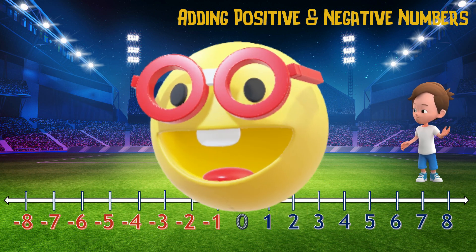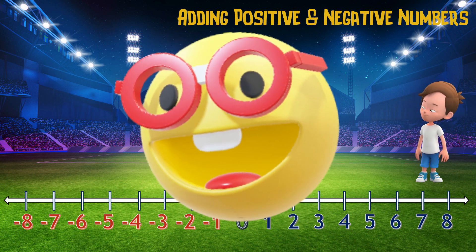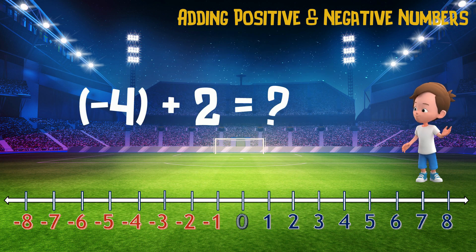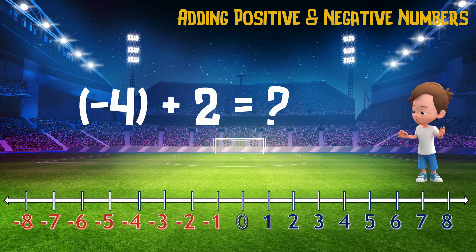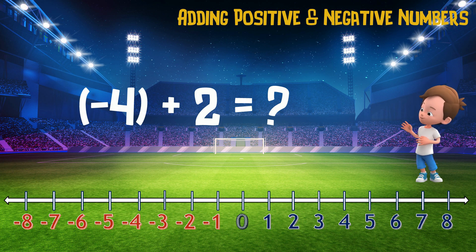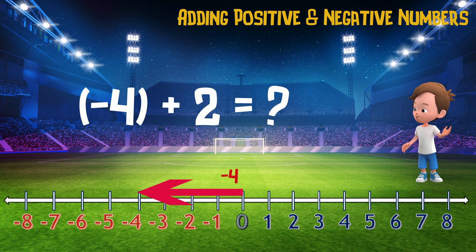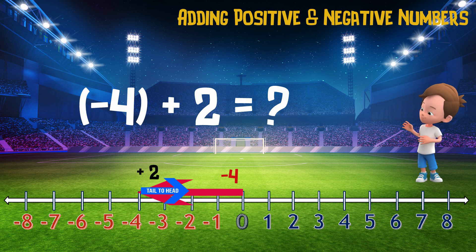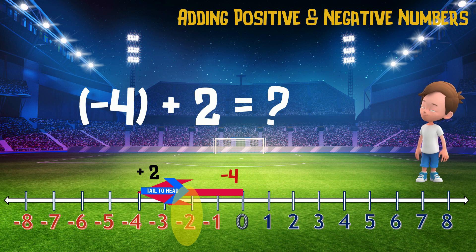Let's look at our second example: negative 4 plus positive 2. Let's show the answer using the number line. Placing the corresponding arrows on the number line, we have negative number 4's arrow pointing to the left from 0 to negative 4. Then positive 2's arrow pointing to the right with its tail fixed at negative 4's arrow head. The last arrow head is now at negative 2, which is the answer to our second example.